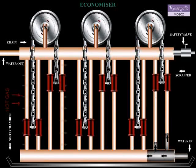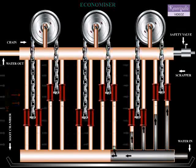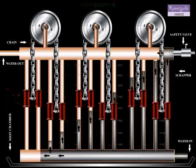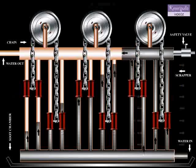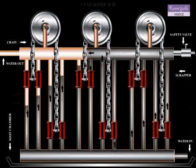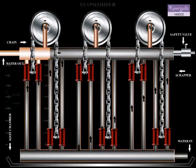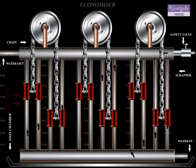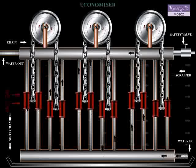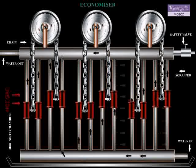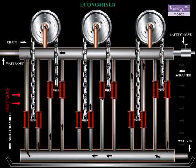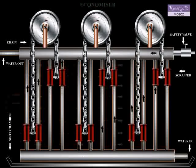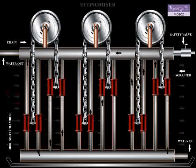The economizer consists of vertical iron pipes fitted with two headers, one at the bottom and one at the top. The feed water is passed through the bottom header, economizer pipes, and top header, and onto the boiler.